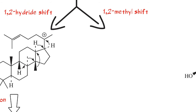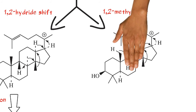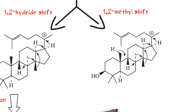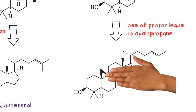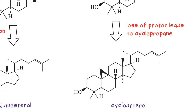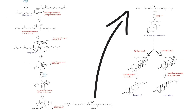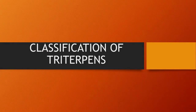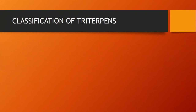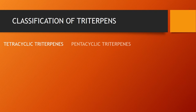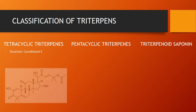For the 1,2-methyl shift protosteroid cation, the loss of proton leads to a cyclopropane ring which produces cycloartenol.